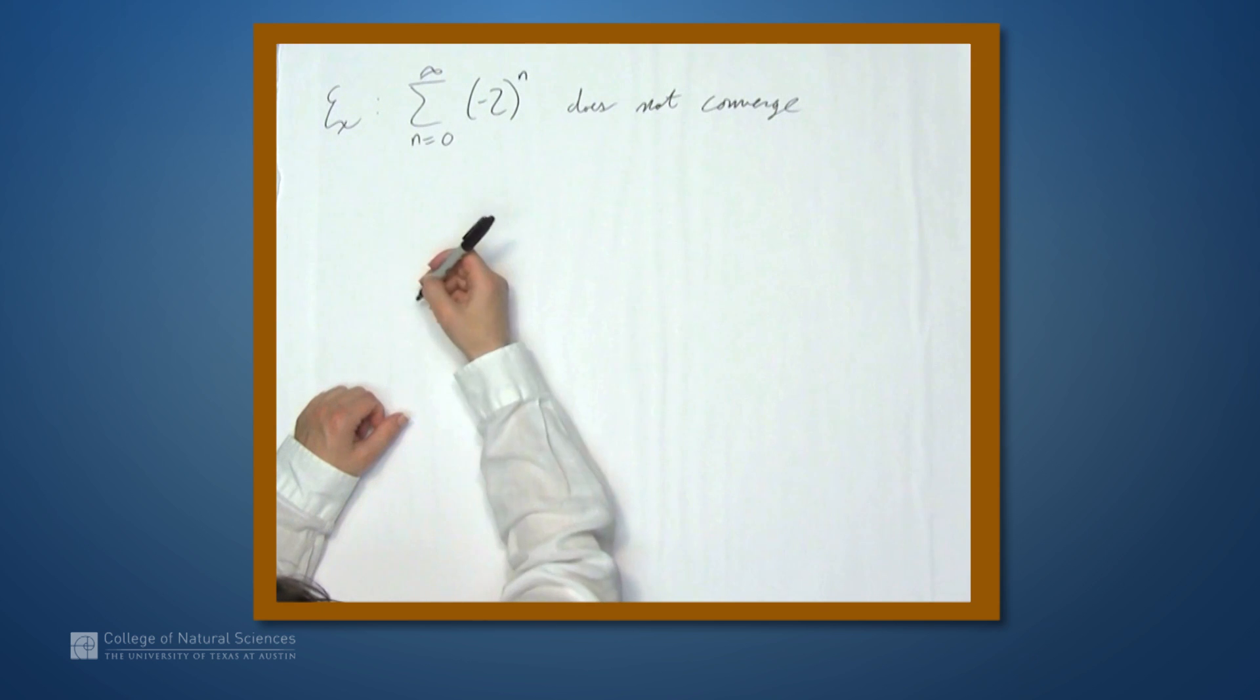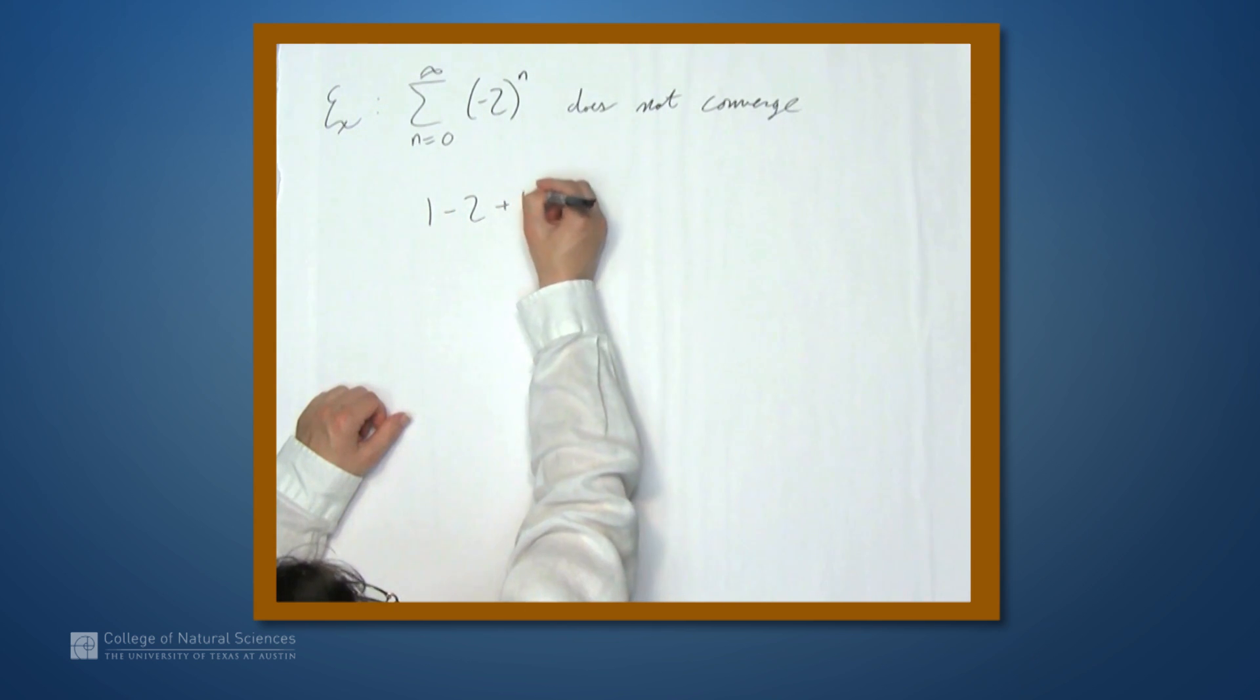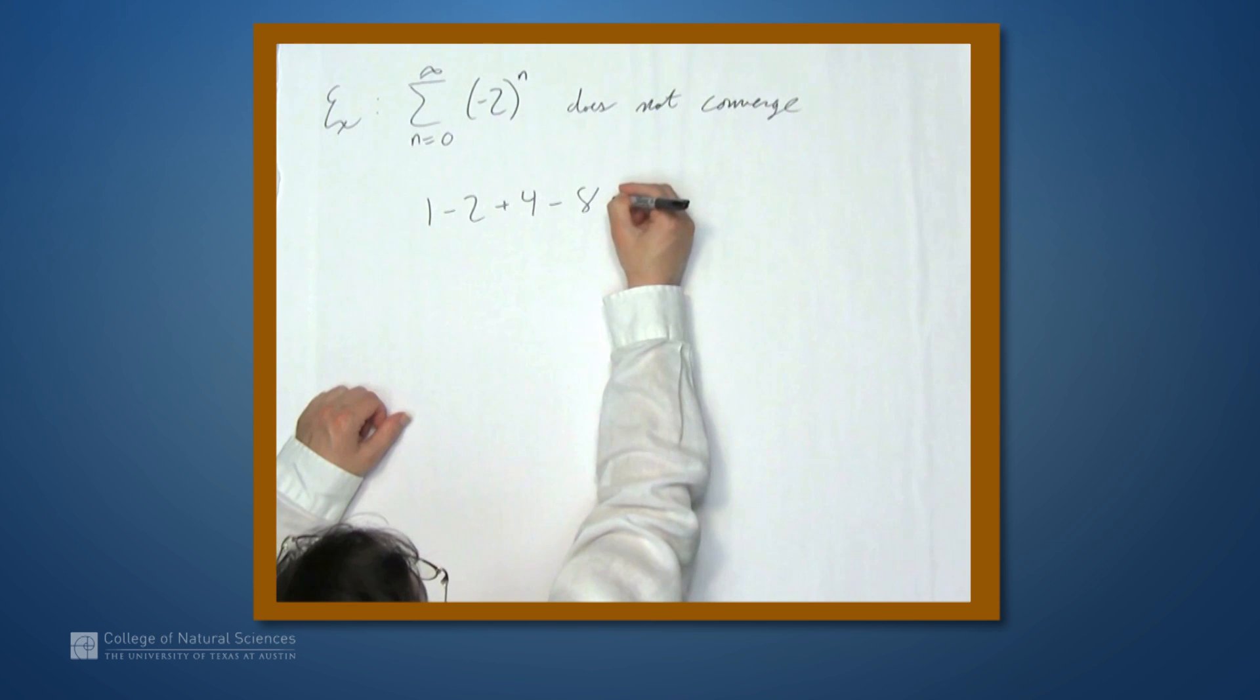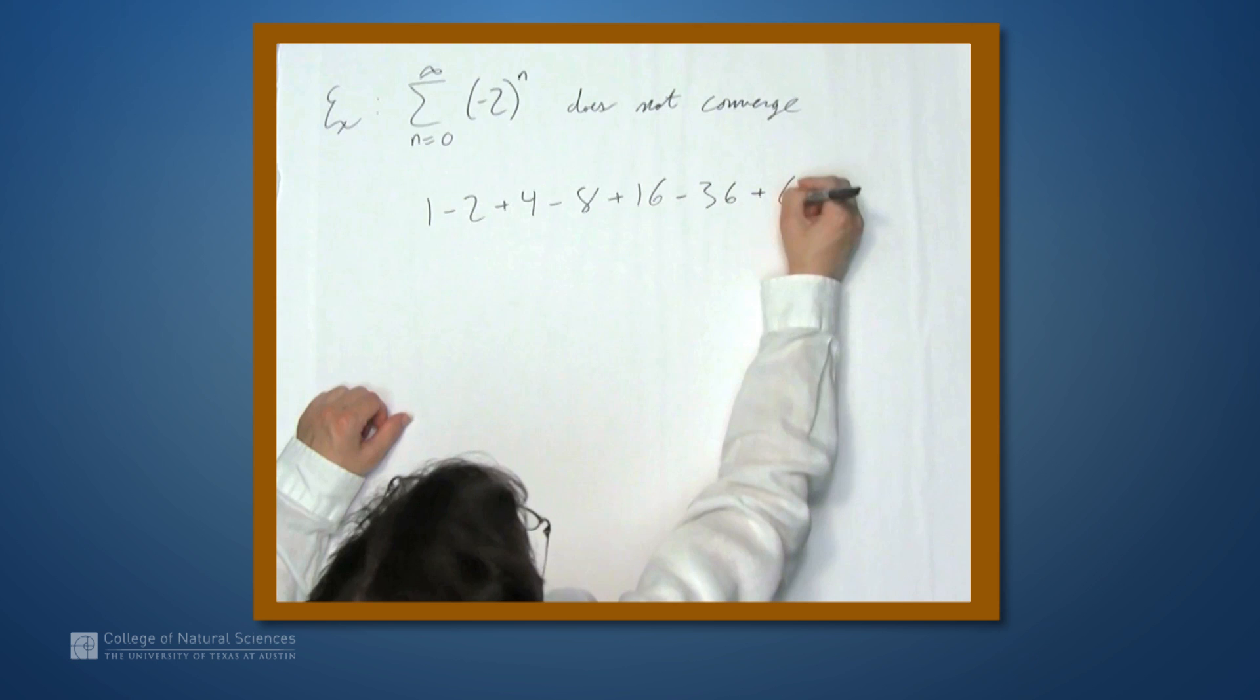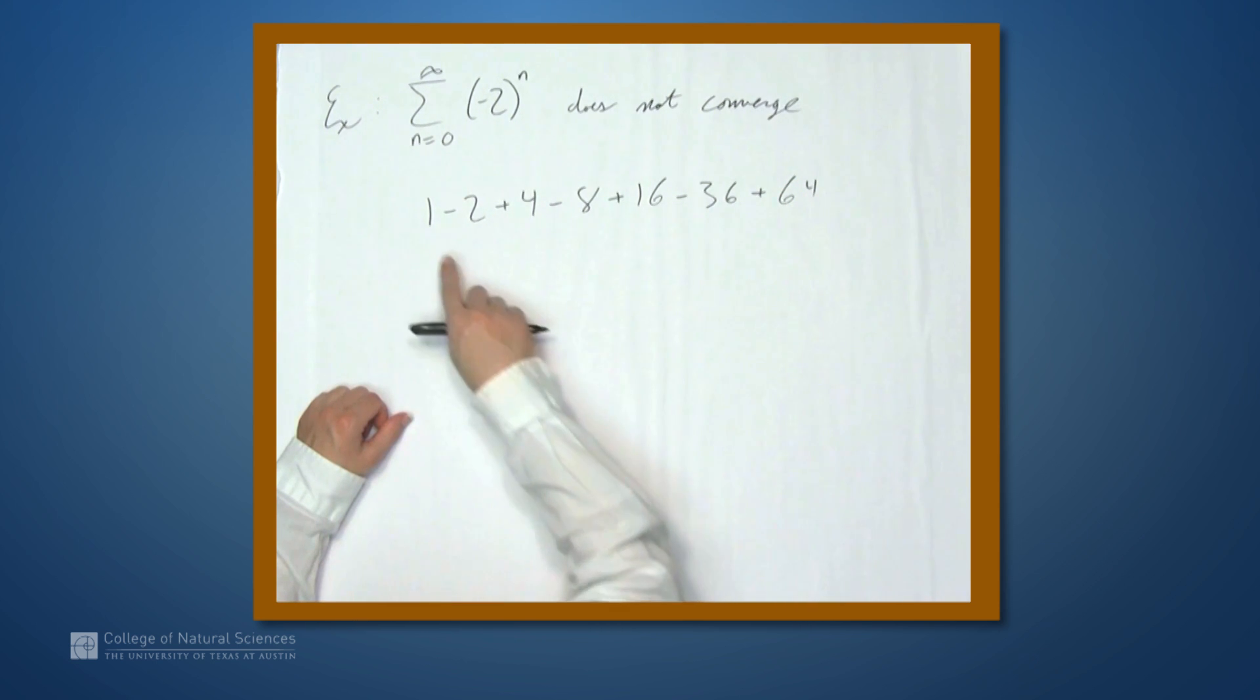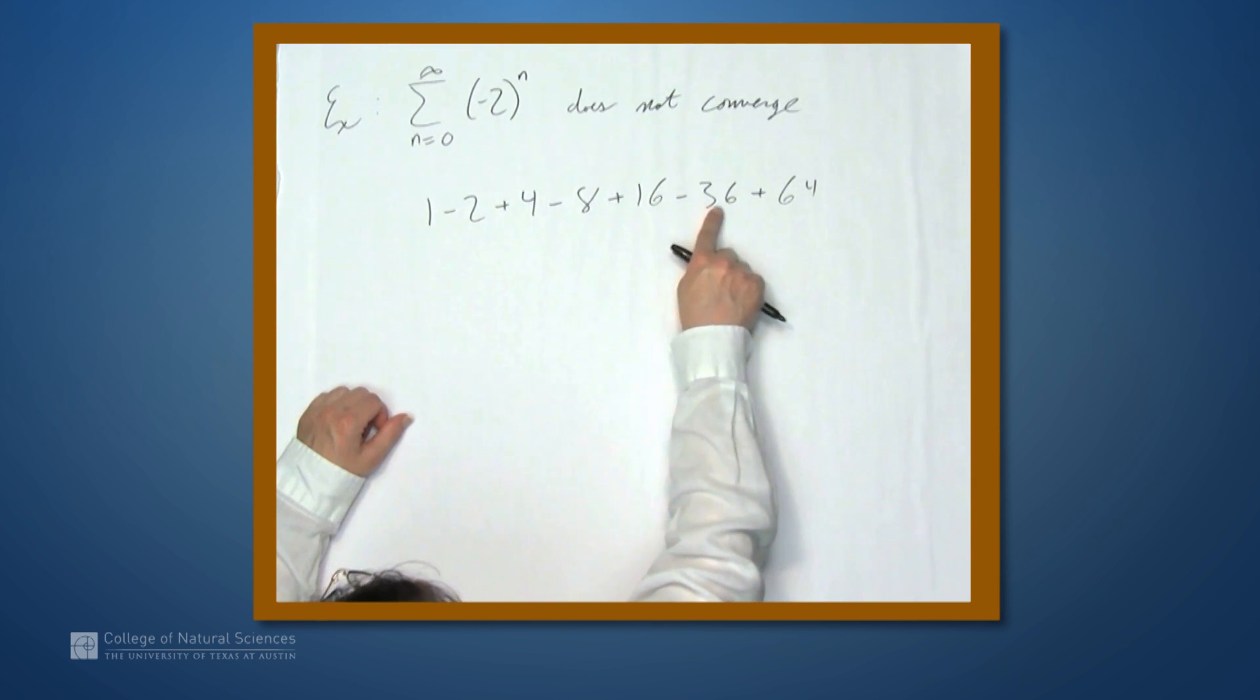And let's write out an abbreviated version of this. This is, well, n equals 0, this is 1, and then we get minus 2, and then plus 4, minus 8, plus 16, minus 32, plus 64, and so on. So this series keeps jumping back and forth from adding these negative and positive terms numbers that bounce the partial sums around. Remember, the partial sums have to converge for the series to converge. And since we're adding and subtracting these larger and larger numbers, those partial sums never converge.